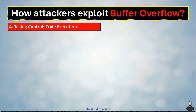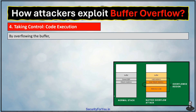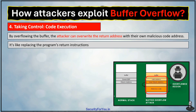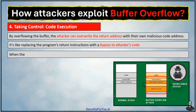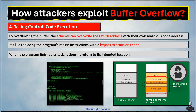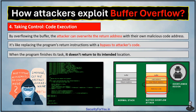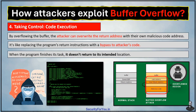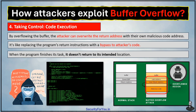The fourth step is taking control and code execution. By overflowing the buffer, the attacker can overwrite the return address with their own malicious code address. It's like replacing the program's return instruction with a bypass to the hidden knife — the attacker's code. When the program finishes its task, it doesn't return to its intended location. Instead, it jumps to the attacker's code embedded in the overflow data. This code executes with the same privileges as the original program, granting the attacker unauthorized access to the system. The attacker uses the program's own functionalities against itself.